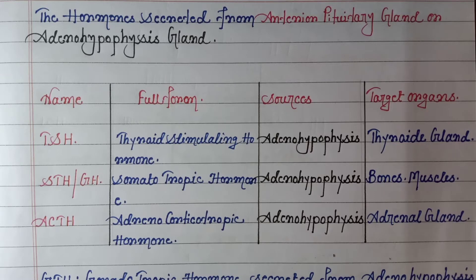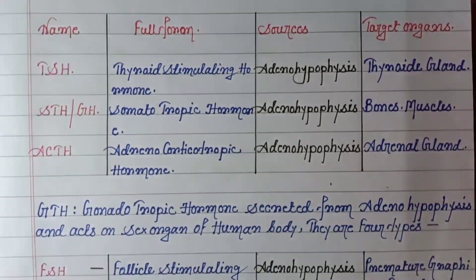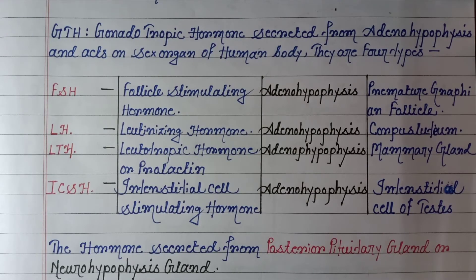The source of ACTH is the adenohypophysis and the target organ is the adrenal gland. Next is GTH, or gonadotropic hormone. This hormone is also secreted from the adenohypophysis gland and acts on the sex organs of the human body, and there are four types.